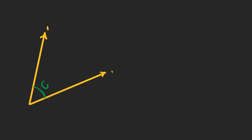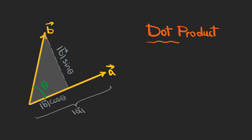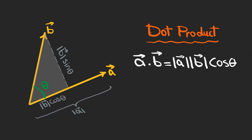Suppose that we have two vectors a and b and the angle between them is theta. We can draw a line perpendicular to a from the endpoint of vector b, forming a right triangle. This side of the triangle is the magnitude of b times sine theta, and this side is the magnitude of b times cosine theta, and this is the magnitude of vector a. We can define the dot product a dot b as the magnitude of a times the magnitude of b times cosine theta.